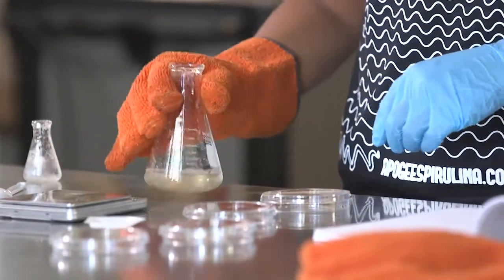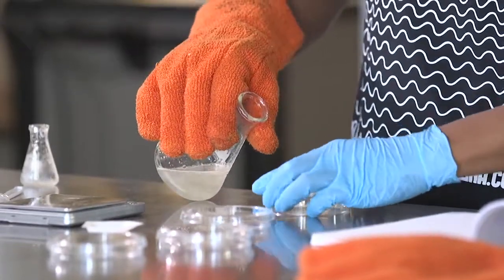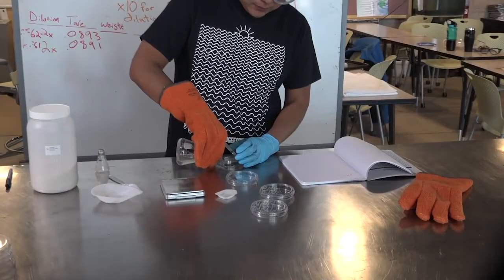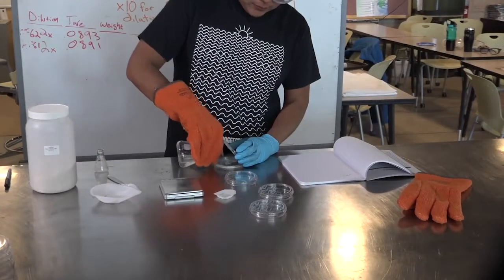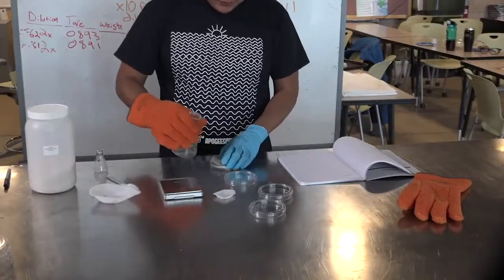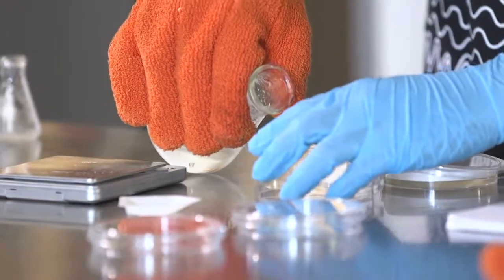When you pour the plate, you'll want to minimize the amount of time that is exposed to the air. So you'll lift the lid, pour about 20 mils in until it covers all the way across. Then when you replace the lid, replace it with a little gap on the top so that the steam escapes.